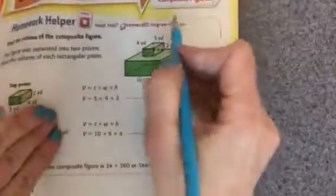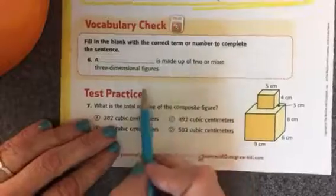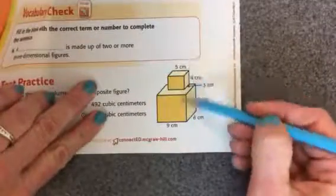If we flip it over, we can see right here, a composite figure. A composite figure is made up of two or more three-dimensional figures. So this is an example of a composite figure.